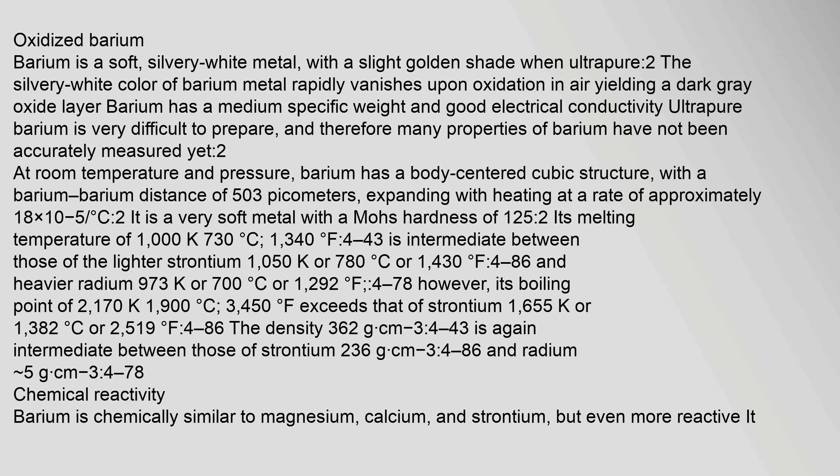At room temperature and pressure, barium has a body-centered cubic structure, with a barium-barium distance of 503 picometers, expanding with heating at a rate of approximately 18 × 10⁻⁵ per degree Celsius. It is a very soft metal with a Mohs hardness of 1.25 to 2.